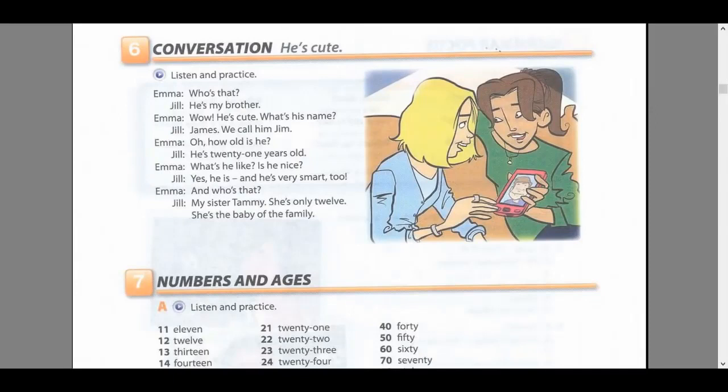Page 19, Exercise 6, Conversation: He's cute. Listen and practice. Who's that? He's my brother. Wow, he's cute. What's his name? James. We call him Jim. Oh, how old is he? He's 21 years old. What's he like? Is he nice? Yes, he is. And he's very smart too. And who's that? My sister Tammy. She's only 12. She's the baby of the family.